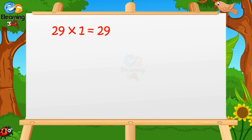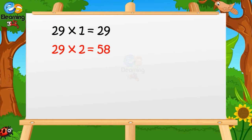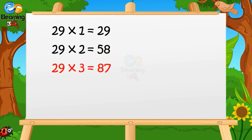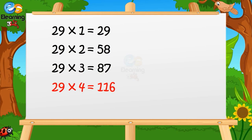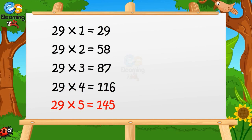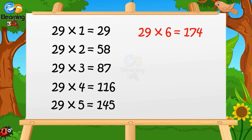29 ones are 29. 29 twos are 58. 29 threes are 87. 29 fours are 116. 29 fives are 145. 29 sixes are 174.